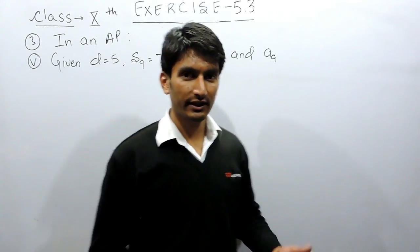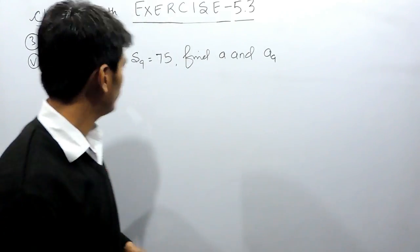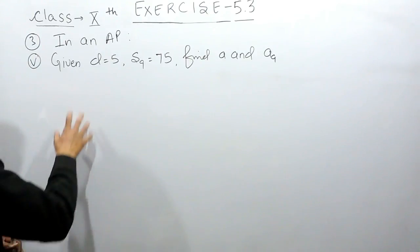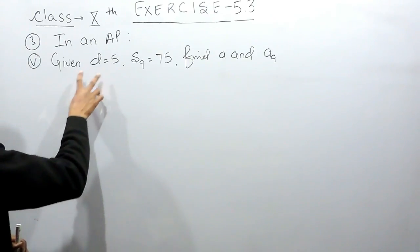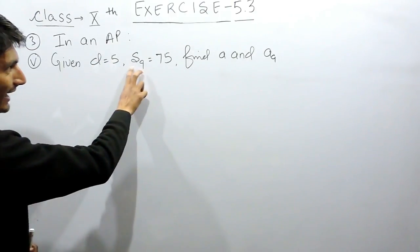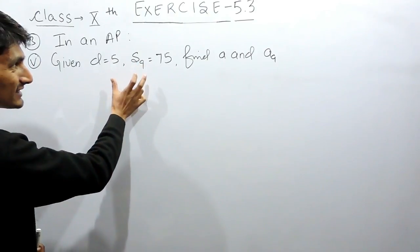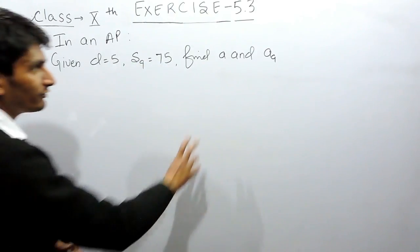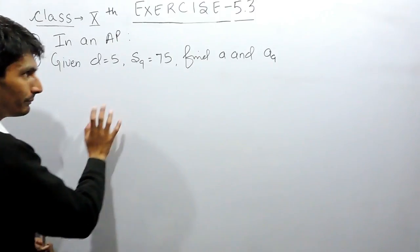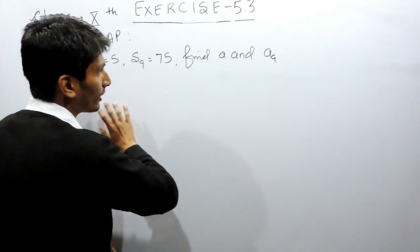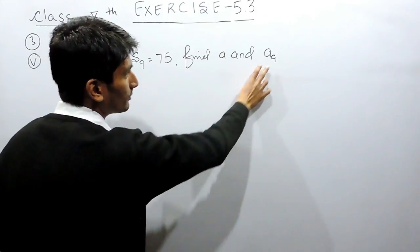Hello everyone. In this video we are going to solve the fifth part of question number three. In an AP, the common difference is 5 and S9, the sum of its 9 terms, is equal to 75. We have to find the first term of that AP and also the ninth term, which is the last term of that AP.